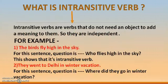Now, intransitive verbs. Intransitive verbs are verbs that do not need an object. Transitive verbs need an object; intransitive verbs don't need an object to add meaning to them. So they are independent.